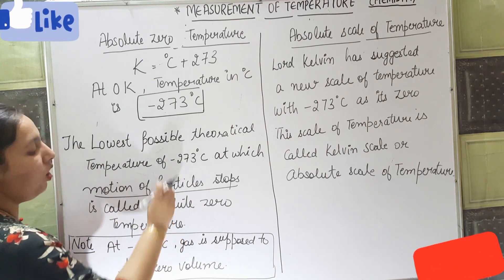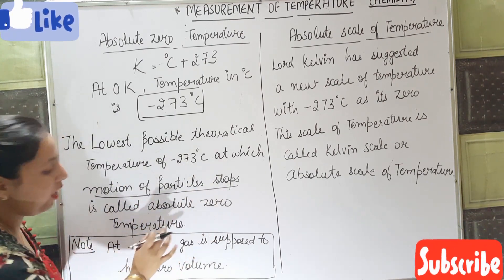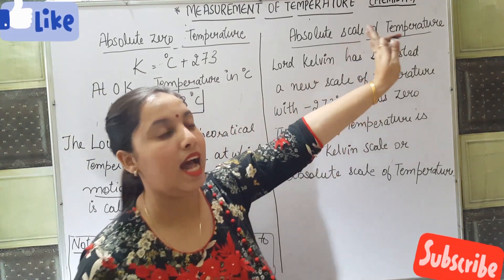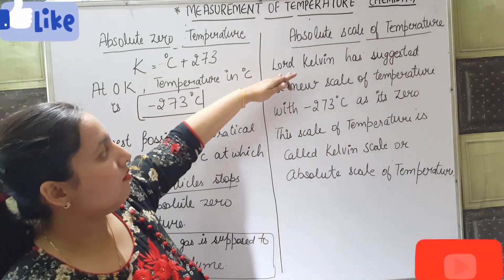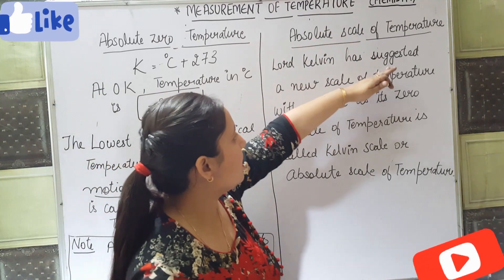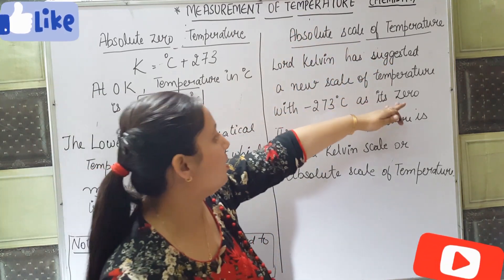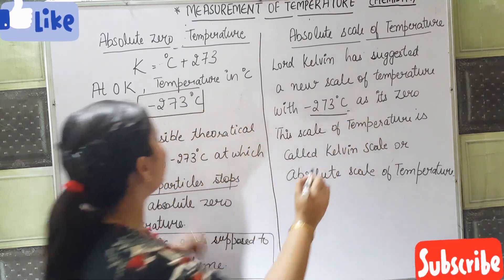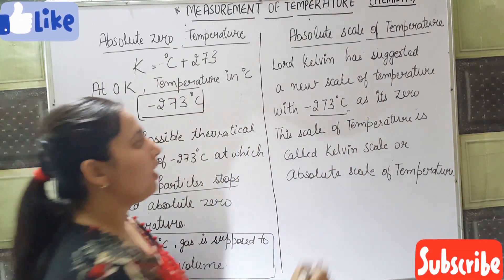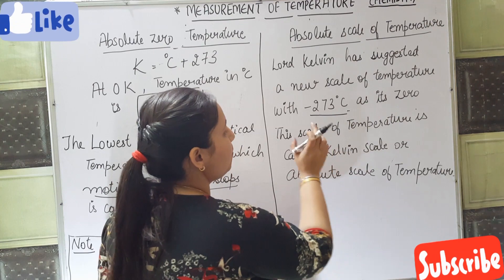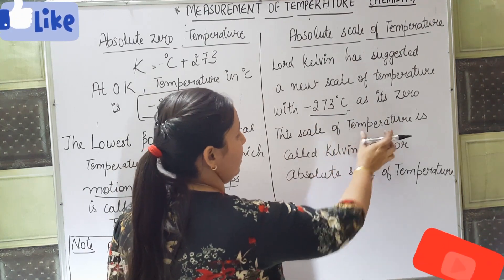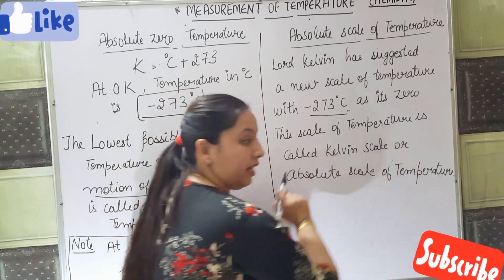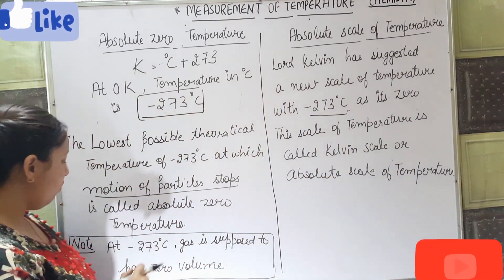To attain this absolute zero temperature, we need a scale. So Lord Kelvin suggested that scale. Lord Kelvin suggested a new scale of temperature with minus 273 degree Celsius as the absolute zero temperature, taken as zero. So this scale of temperature is called the Kelvin scale, or it is the absolute scale of temperature.